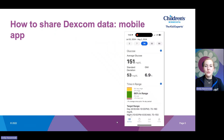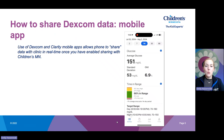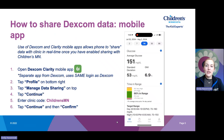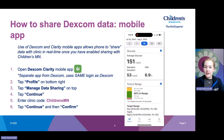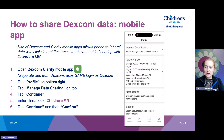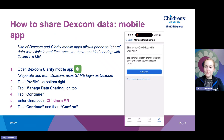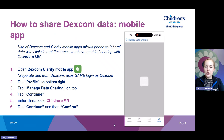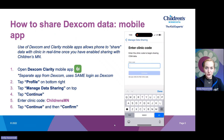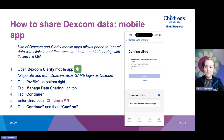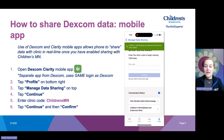Now let's learn how to enable sharing through the mobile app for Clarity. Download the Clarity mobile app and log in with your Dexcom information. I'm going to show a quick video as we talk through this. Once you are logged in, tap on Profile on the bottom right, then Manage Data Sharing at the top. Tap Continue, then enter our clinic share code: CHILDRENSMN — no apostrophe, capital C and capital MN. Tap Continue. It will display our clinic information and you will click Confirm. Once you have done that, you will see the connected clinics at the bottom, showing that the Children's Minnesota Diabetes and Endocrine Clinic is shared with your account.